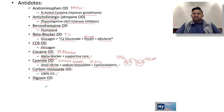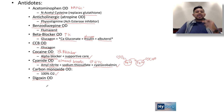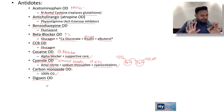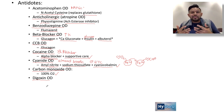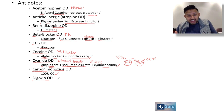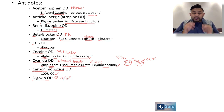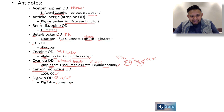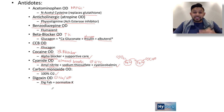Digoxin overdose is interesting: hypokalemia predisposes you to digoxin toxicity, but digoxin overdose itself causes hyperkalemia — because digoxin inhibits the sodium-potassium ATPase, specifically at the potassium side. Patients who are hypokalemic on digoxin are most at risk. Management involves normalizing potassium and giving digifragments (Digibind).